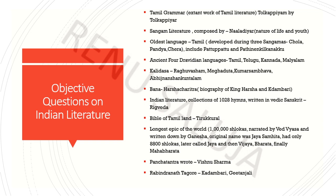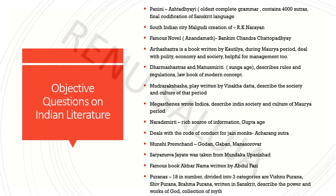पंचतंत्र जो कि Political Treaties को describe करती है, वो विष्णु शर्मा ने 300-400 BC के आसपास लिखी थी। रबिंद्रनाथ टैगोर जो कि बंगाल से थे, बहुत फेमस पोएट थे। उन्होंने बहुत कुछ लिखा है — Geetanjali उनका important work है, और उनको Nobel Award भी मिला है। Booker Prize की बात करें तो वो अरुंधती राय को मिला है। ये भी Indian author हैं, लेकिन ज्यादा ancient literature से questions पूछने की possibilities हैं।